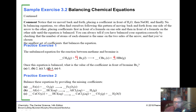Let's do one more — balance iron reacting with oxygen. There are two irons in the product, so put a two in front of Fe. Now for oxygen: there are two oxygens on the reactant side and three on the product side, so find the least common multiple — put a three in front of O2 and a two in front of Fe2O3. Now we have six oxygens on each side, but that gives us four irons on the product side. Change the Fe coefficient to four. Now: four irons, four irons; six oxygens, six oxygens.